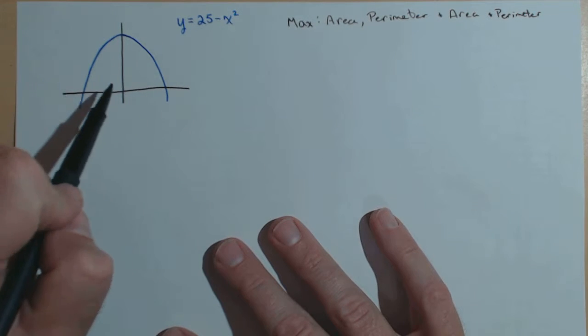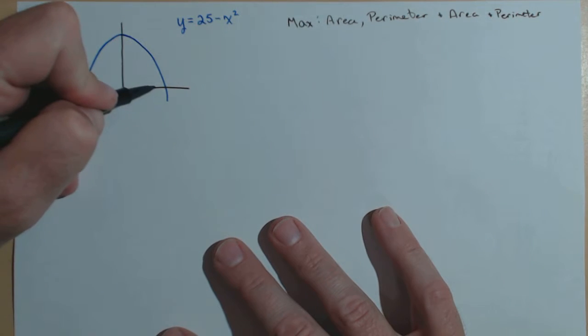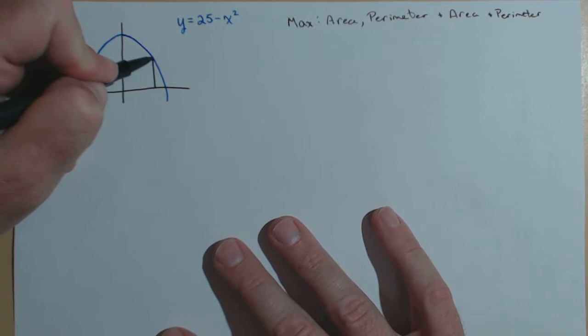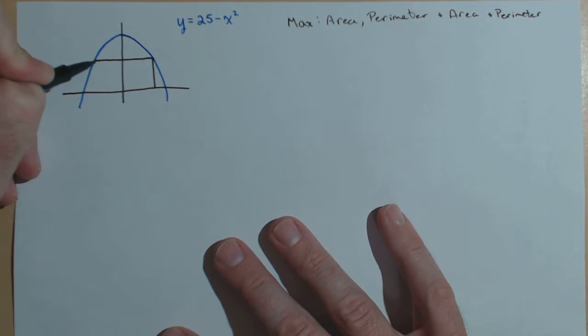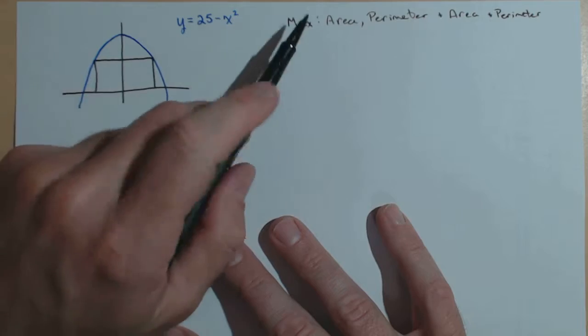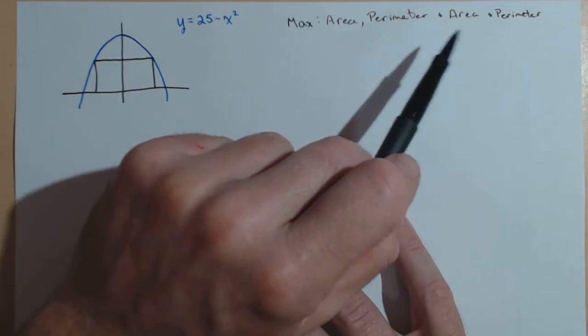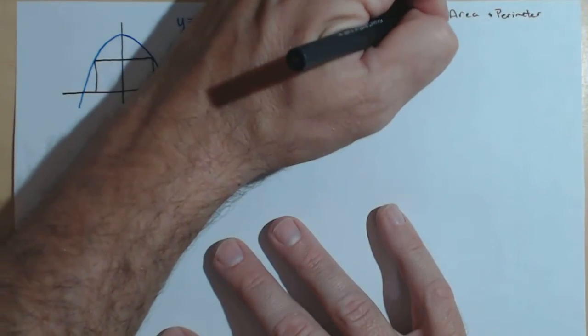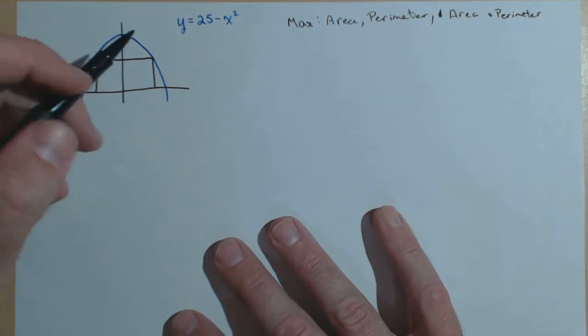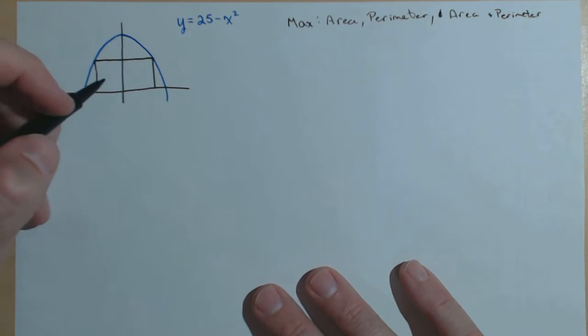In this video, we're given the curve y equals 25 minus x squared, and what we're going to be doing is inscribing a rectangle whose corners hit our curve, and we want to maximize the area, perimeter, and then the sum of the area and perimeter of that rectangle.